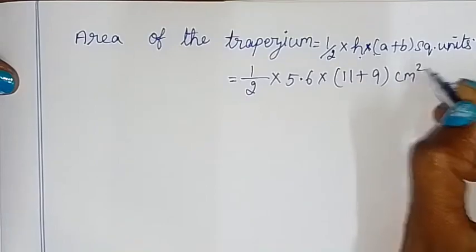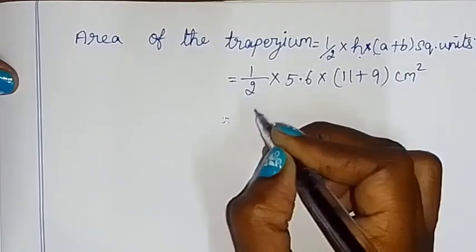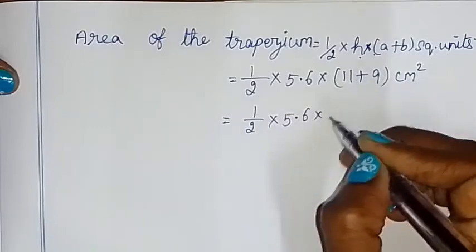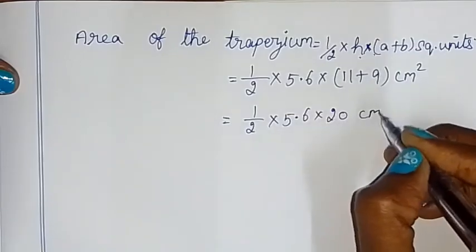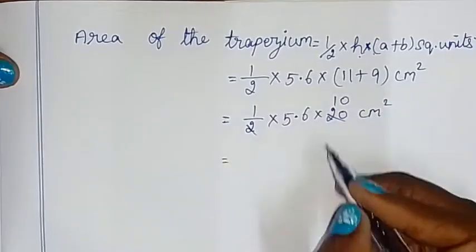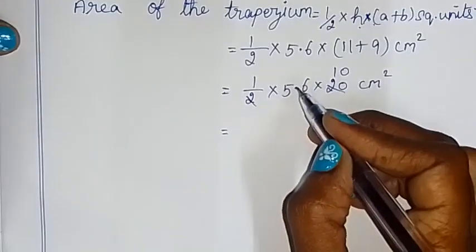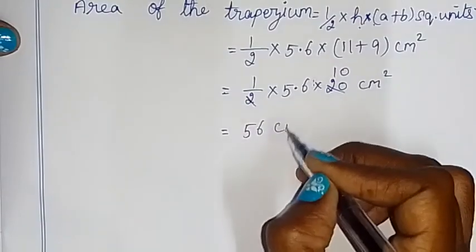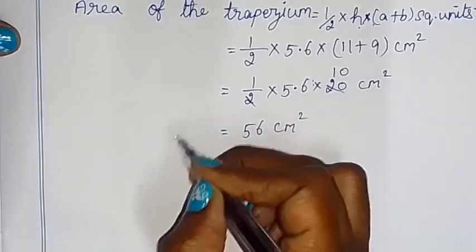So this is equal to half into 5.6 into, 9 plus 11 is 20 cm square. So if we cut, tens, so this is equal to 5.6 into 10. So this is equal to 1 decimal point, so 56 cm square. Required area.